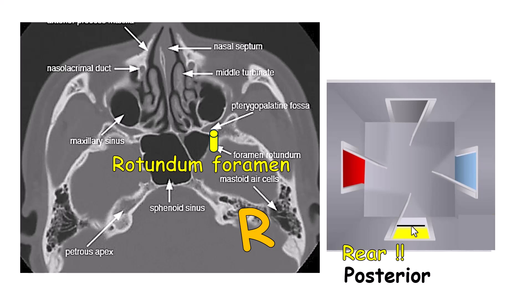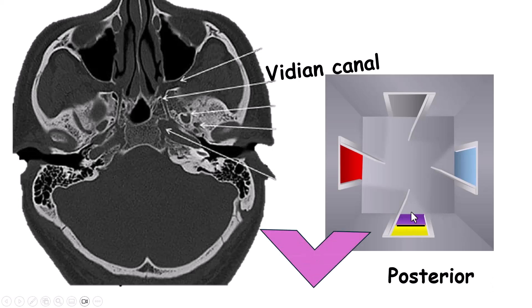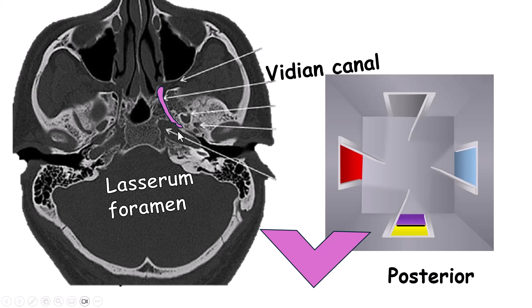The lower half of the posterior door is the pterygoid or vidian canal. I remember the vidian is the lower opening of the posterior door because the V almost looks like an arrow pointing down. Unlike the foramen rotundum that looks like a cylinder going straight back, the vidian canal has a bit of a curve to it going laterally, looking a little like the letter L. This helps me remember that the vidian canal connects to the foramen lacerum. So in this axial view, the vidian canal is kind of an L shape, and the vidian canal goes to the foramen lacerum.